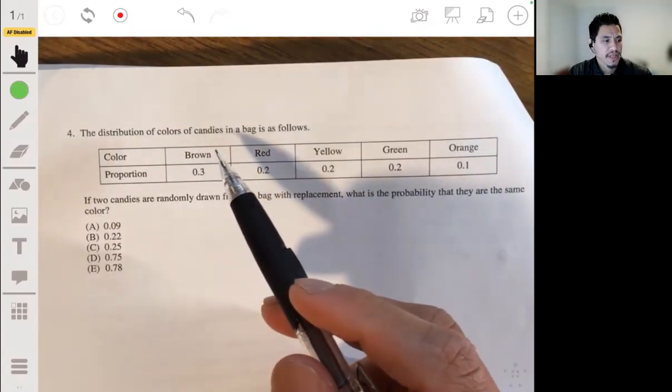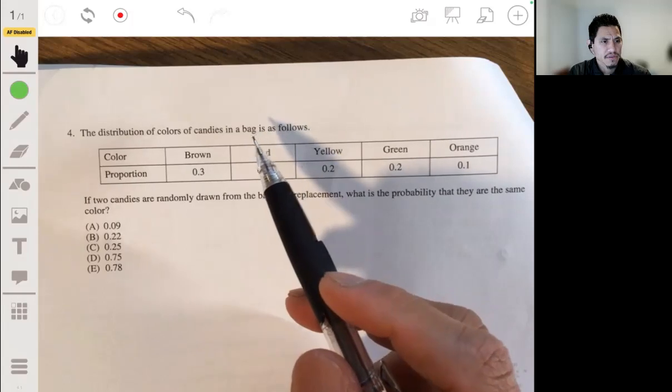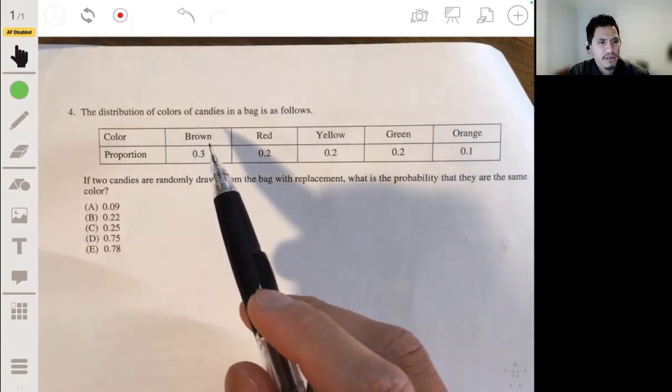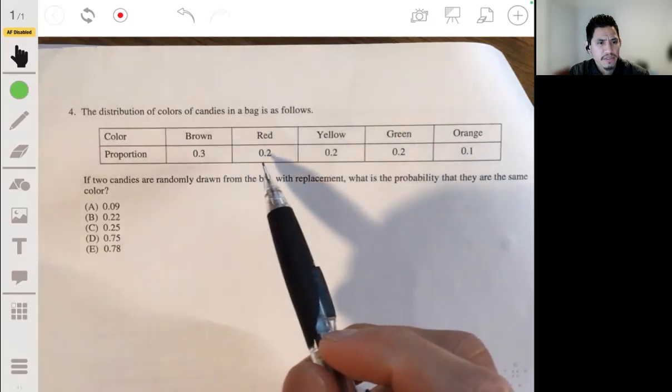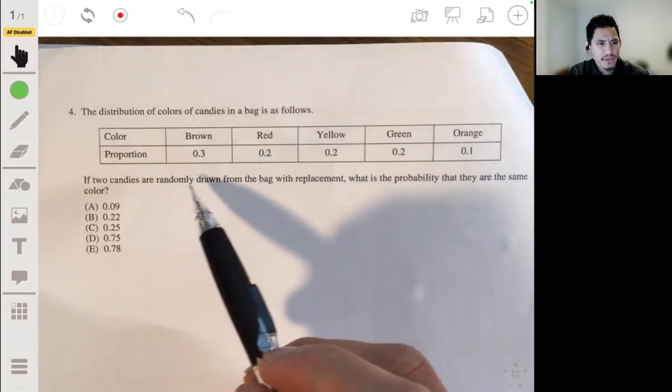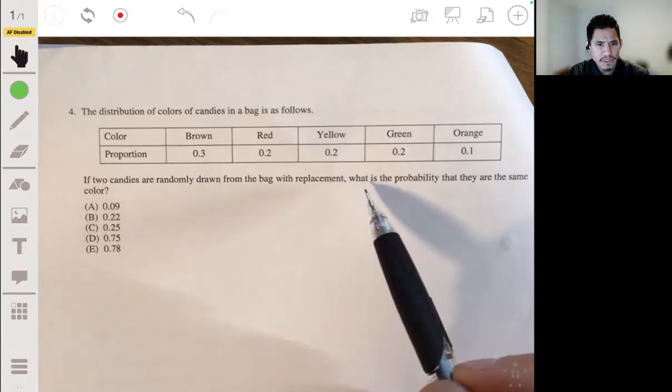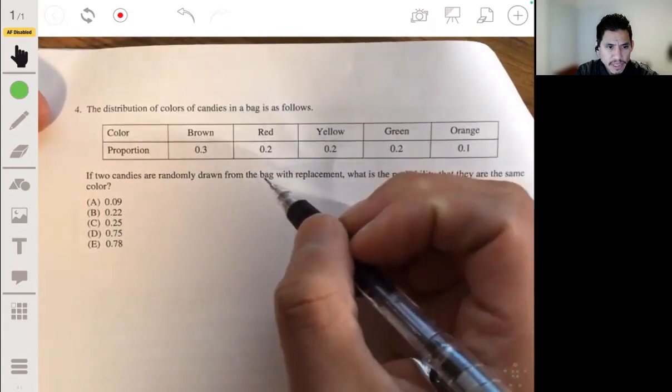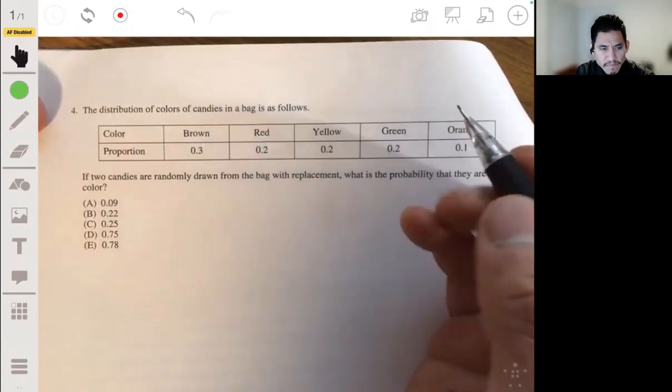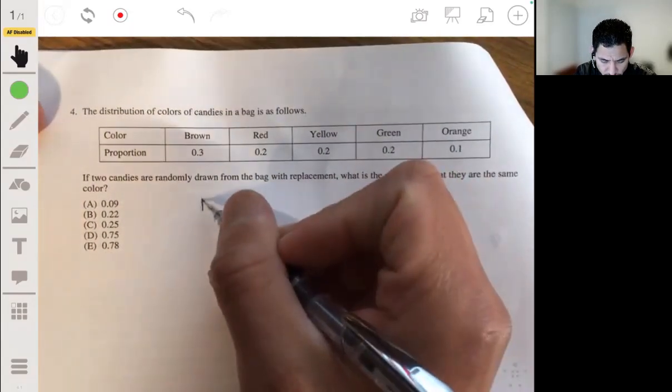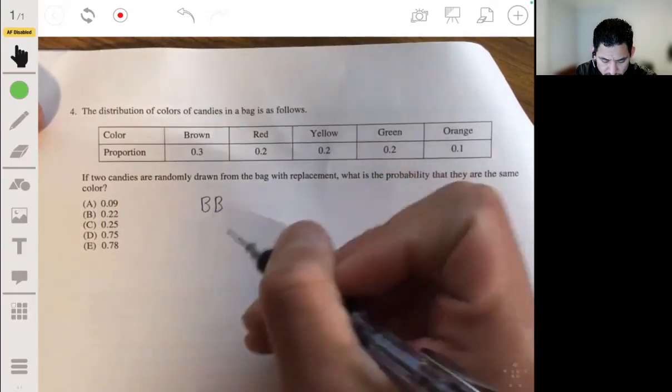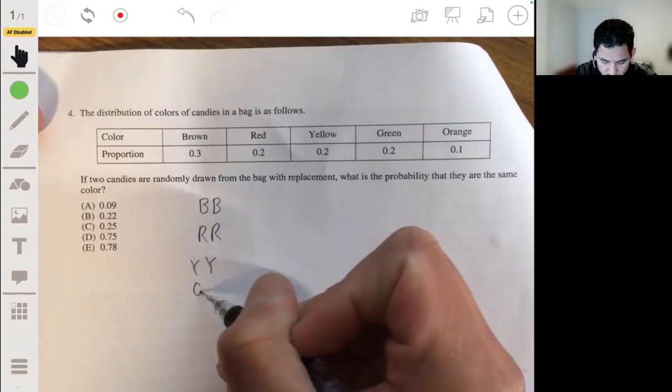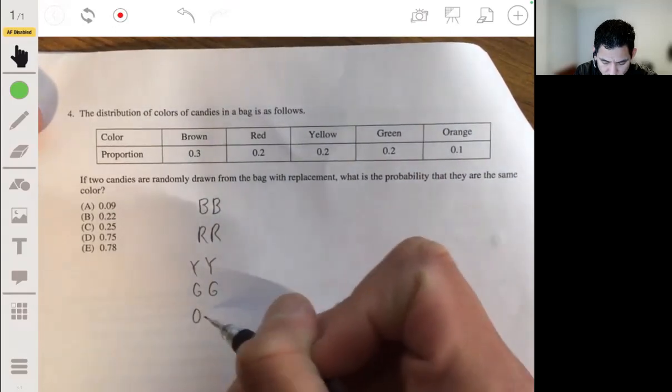All right, for the distribution of colors of candies in a bag is as follows. So we have brown, red, yellow, green, and orange according to these proportions. If two candies are randomly drawn from the bag with replacement, what is the probability that they are the same color? Okay, so with replacement meaning that you're going to put the candy back. So in other words, like what's the probability of getting two browns, or two reds, or two yellows, or two greens, or two oranges?